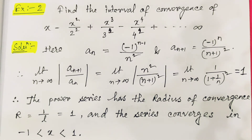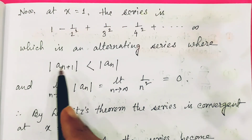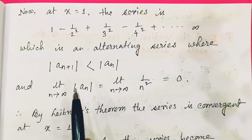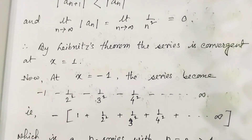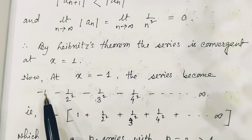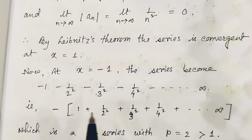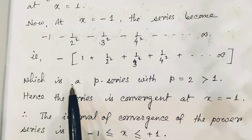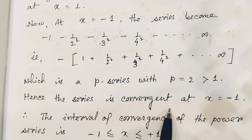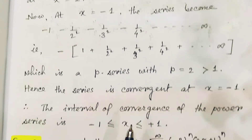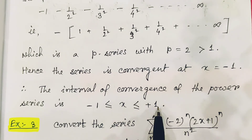Now we test the endpoints. When x = 1, the series becomes a fully alternating series. By Leibniz's theorem, since it is decreasing and its nth term tends to 0, the series is convergent at x = 1. When x = −1, after simplification the series becomes a p-series with p = 2, which is greater than 1, so it is also convergent at x = −1. Therefore, the interval of convergence is the closed interval [−1, +1], with both endpoints included.